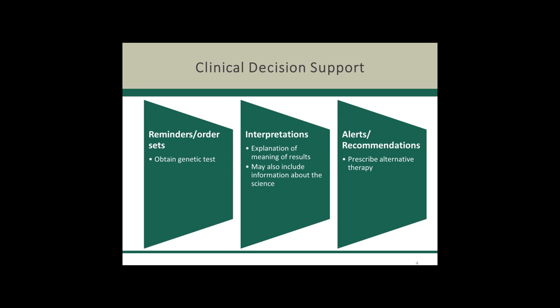We've been talking about clinical decision support throughout this workshop, but I don't think we've really talked about some of the different types. These are just a couple of examples. Maybe these three types of clinical decision support are the important ones when talking about genomic medicine: reminders or order sets where you might be reminded to obtain a particular test; interpretations, which could explain the meaning of results or include more details about the science behind them; and alerts and recommendations at particular points in the clinical process.